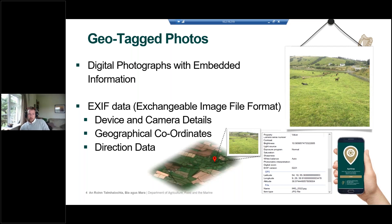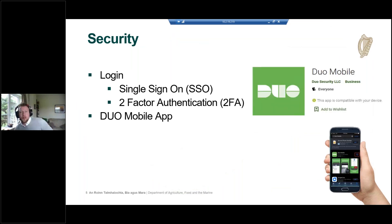These Geotag photos will be sent in with the AgriSnap app. Continuing from what Tom was explaining: with the recent cybersecurity issues, all external logins to department systems now require two-factor authentication. You'll still have your single sign-on approach, but there'll be a new app that will have to be downloaded — the Duo mobile app — and this will facilitate the two-factor authentication.